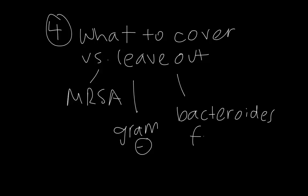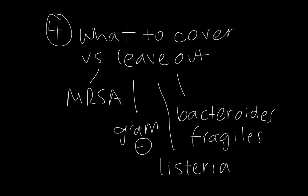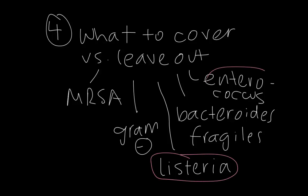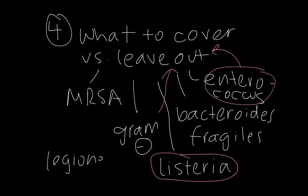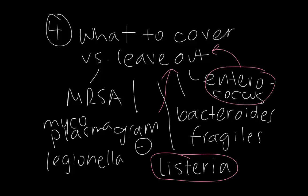Listeria is another organism that comes up frequently on exams. We don't see it often, but many antibiotics have gaps against it. Enterococcus and listeria are two organisms you might not be covering, but they may not be critically important — you can leave them out. When discussing atypical pneumonia, the main concern is Legionella. Mycoplasma is another atypical, but it presents more benignly and doesn't require immediate antibiotic intervention.